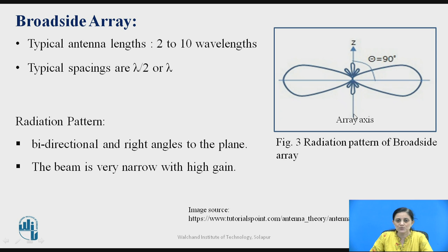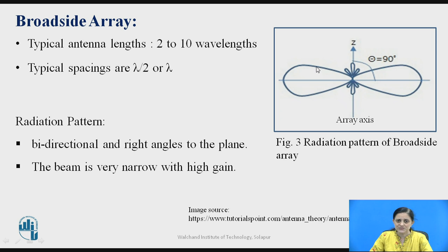The radiation pattern for the broadside antenna is bidirectional and at right angles to the plane. Observing the figure, the beam is very narrow, and therefore for the broadside antenna array the gain is high.